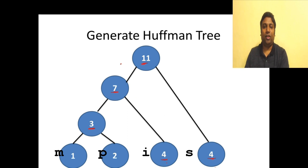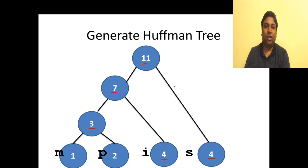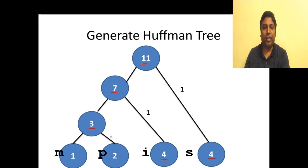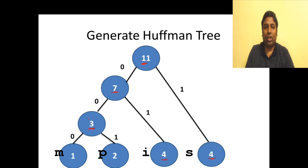We have now constructed the tree. The next step is to label the edges: on the right-hand side edges we assign a 1, and on the left-hand side edges we assign a 0.